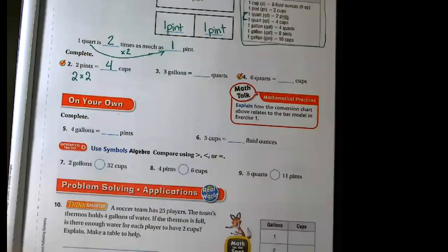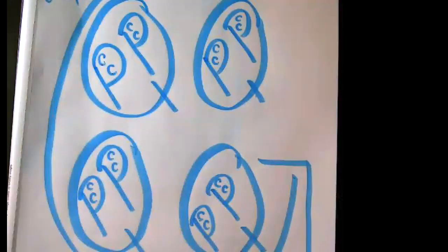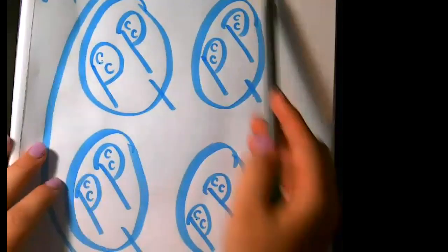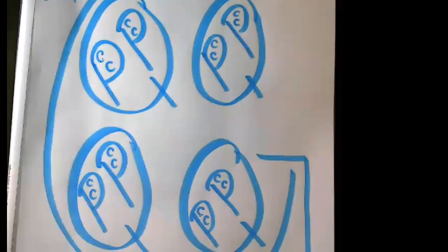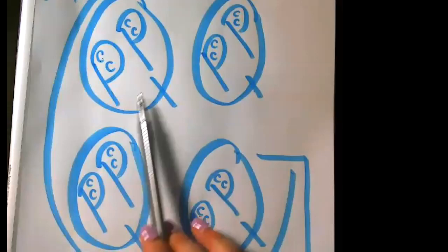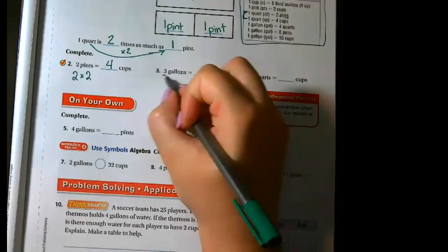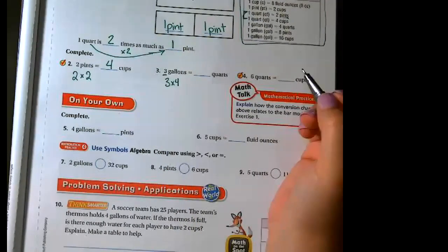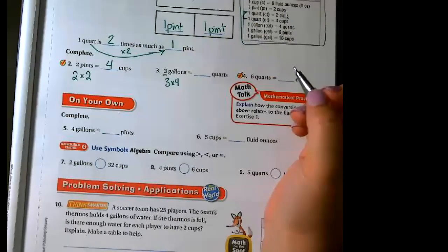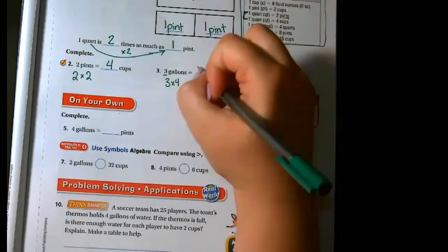For our next one, we're looking at three gallons and we want to change that into quarts. If I look inside my gallon, how many quarts do I have? Four — there's one, two, three, four. So I would take my three and multiply it by four. And three times four is twelve.